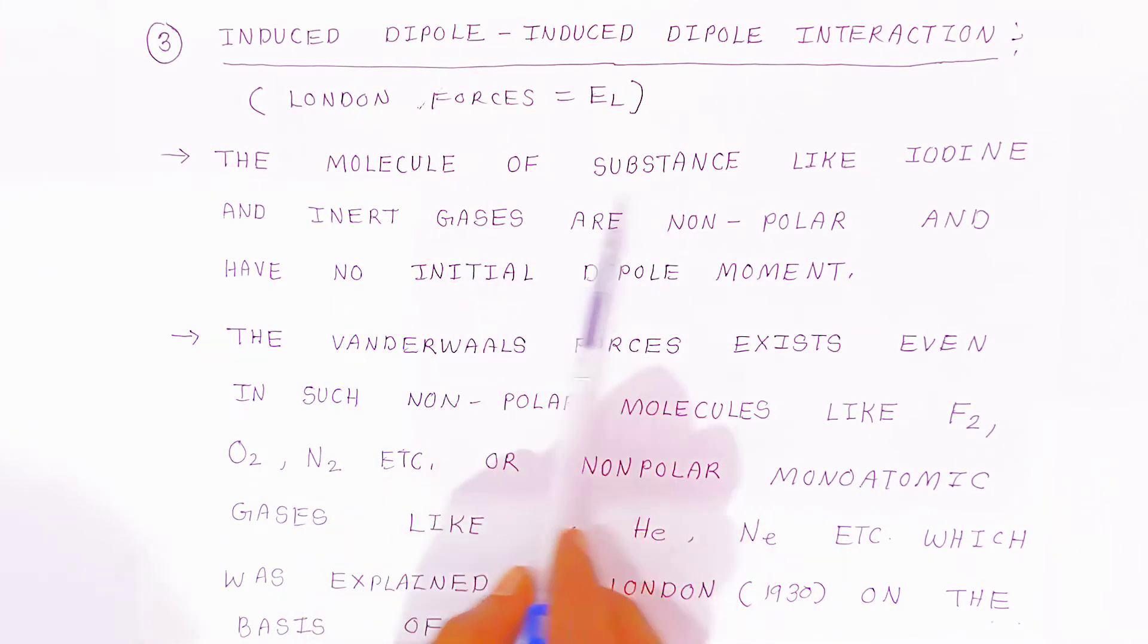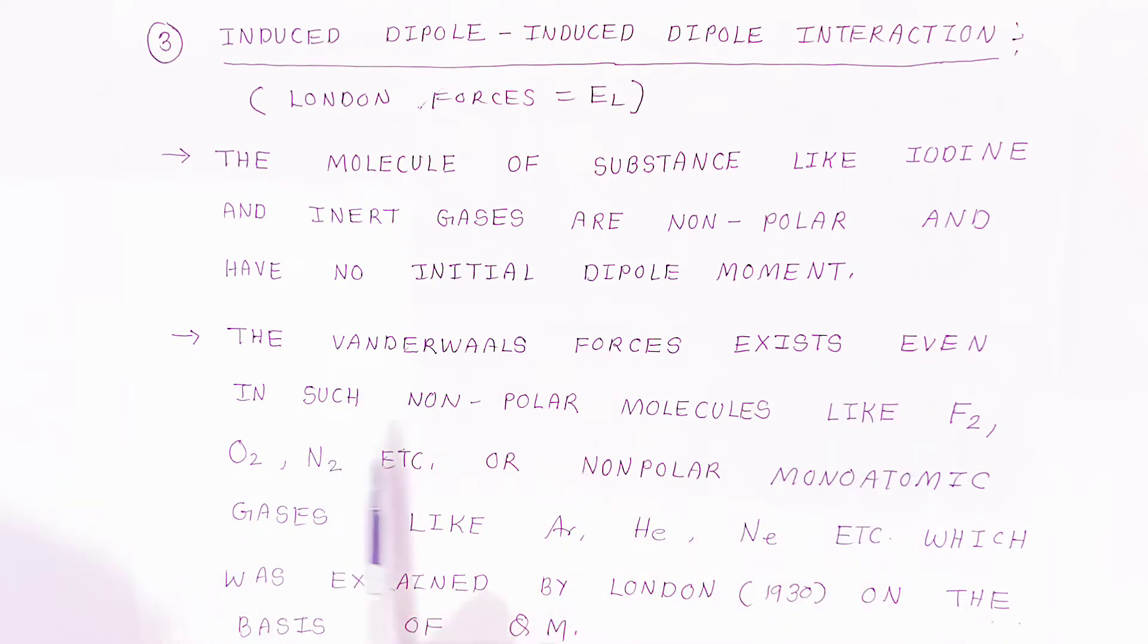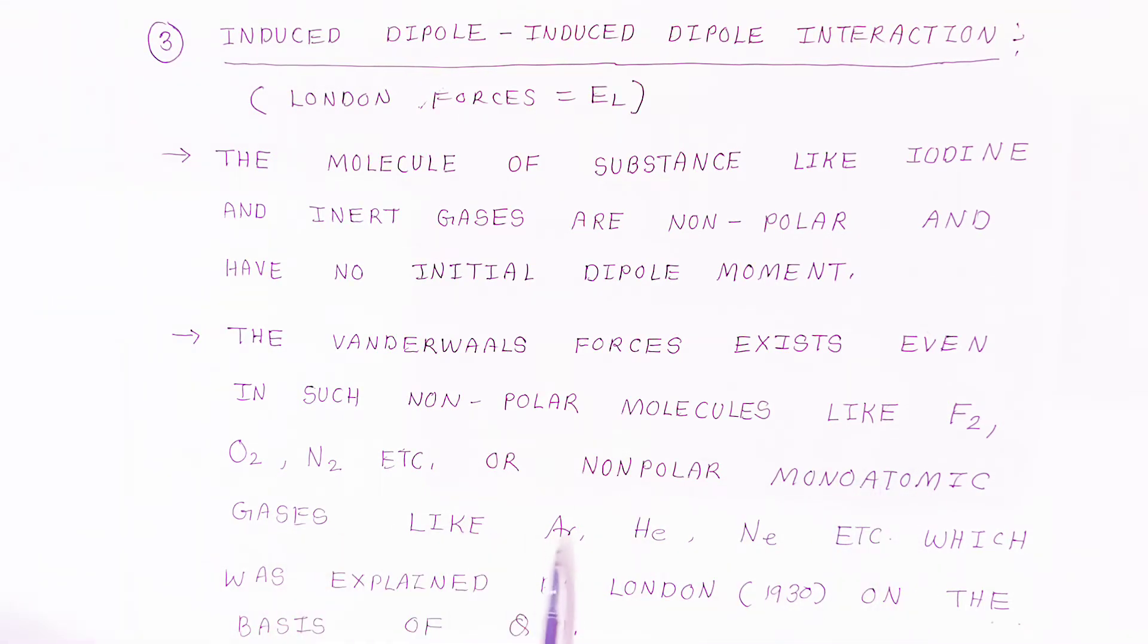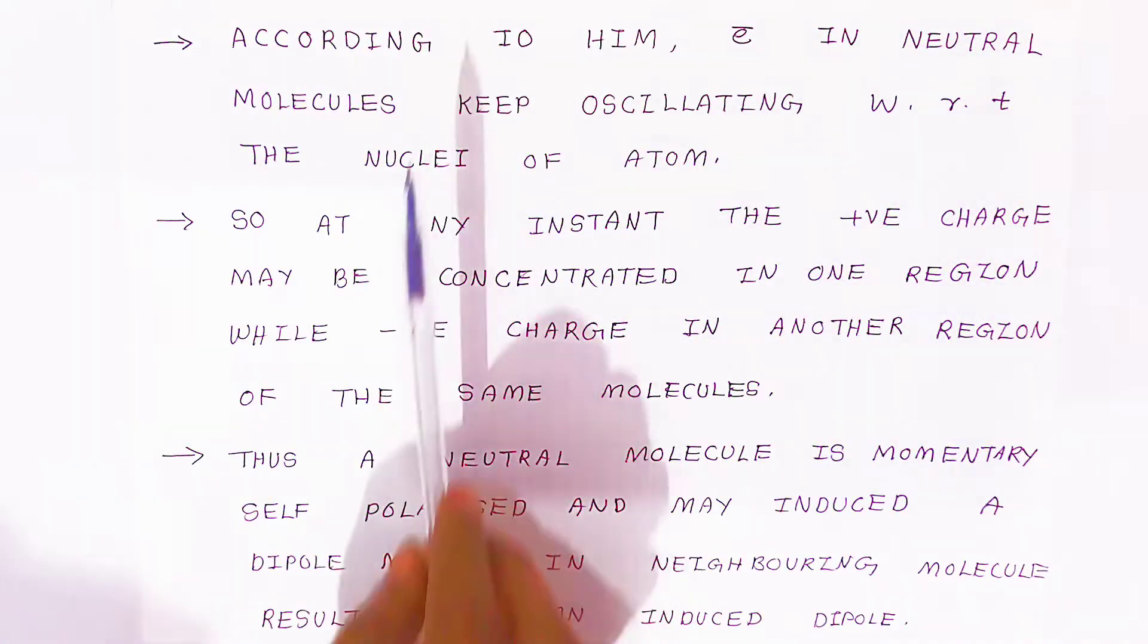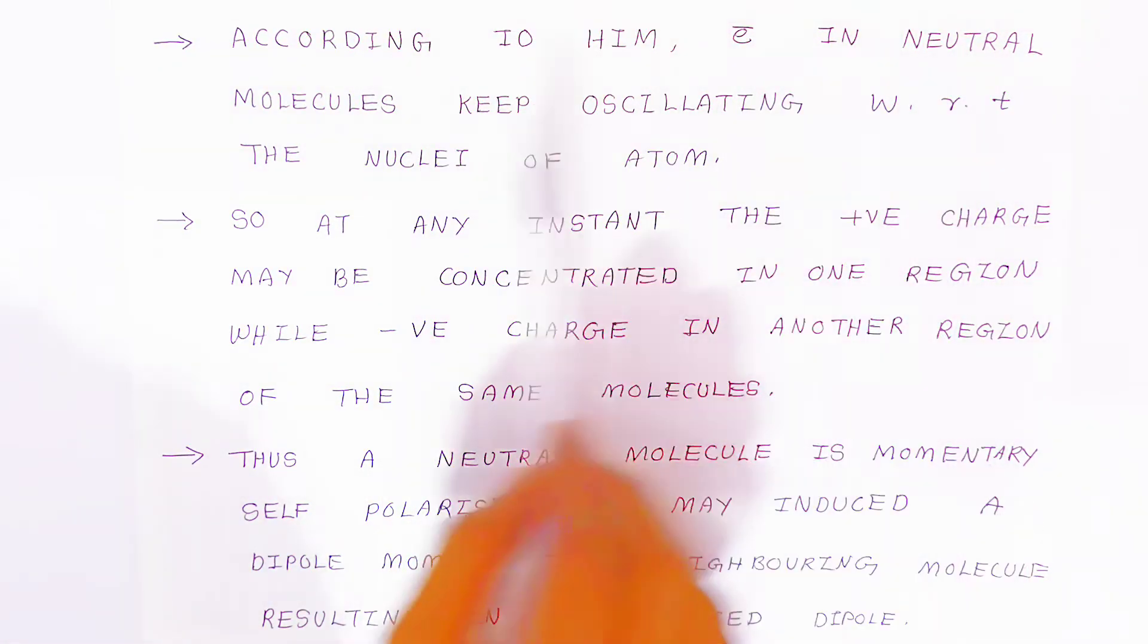Van der Waals forces exist even in such non-polar molecules like fluorine, oxygen, nitrogen, or non-polar monoatomic gases like argon, helium, neon, which was explained by London in 1930 on the basis of quantum mechanics. According to him, electrons in neutral molecules keep on oscillating with respect to the nuclei of the atom.